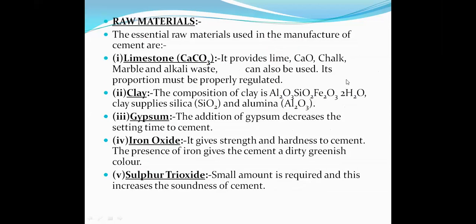The raw materials of Portland cement are discussed step by step. The first raw material is limestone, which is calcium carbonate. From calcium carbonate, lime (calcium oxide, CaO) is provided. Limestone is the main constituent present in cement — about 60 to 65 percent of the overall composition. Calcium oxide is the main constituent present in Portland cement.